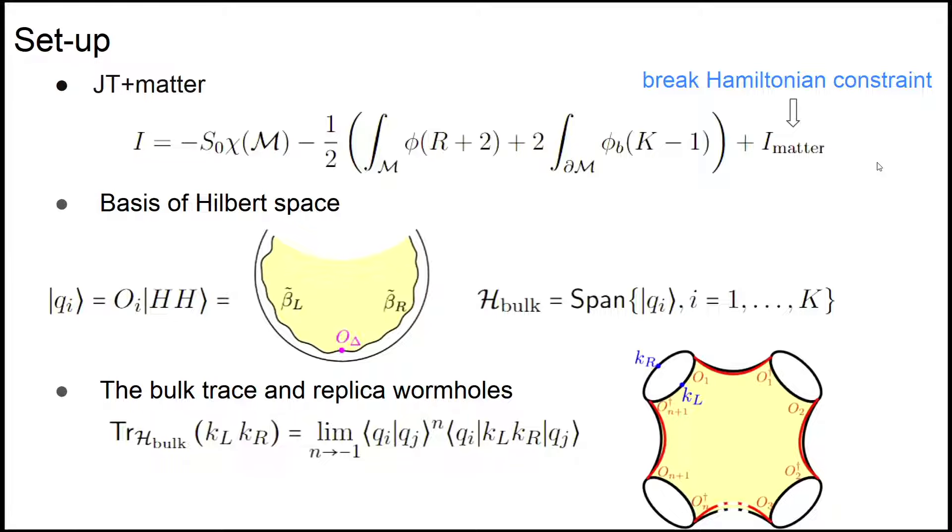For the concrete setup, we consider the theory of JT plus matter. We want to have matter in the theory because we want to break the Hamiltonian constraint, having the left energy and right energy be different so that the Hilbert space itself is possibly factorized.